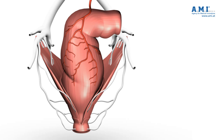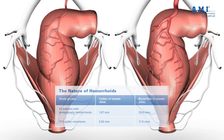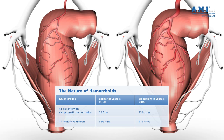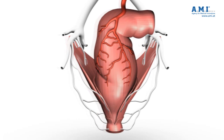A study investigating the diameter of the large rectal arteries as well as the blood flow reveals a second important factor. The results show that in patients with hemorrhoidal disease, these arteries are almost twice as large in diameter, with a blood flow three times greater than in healthy patients. This leads us to conclude that the increased arterial supply is responsible for the development of abnormally large hemorrhoids.